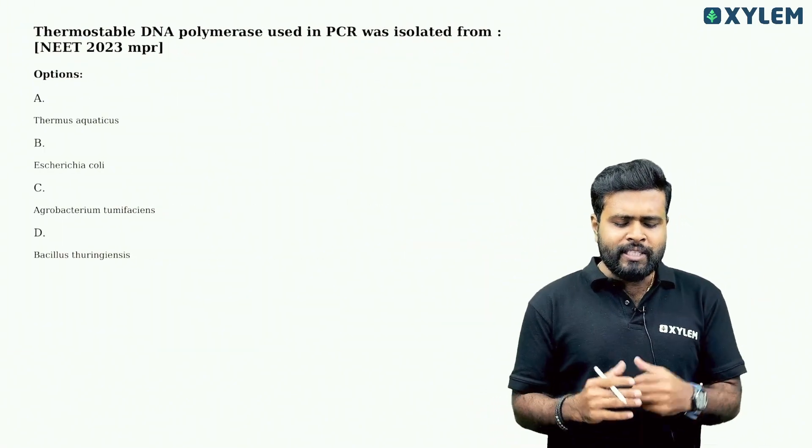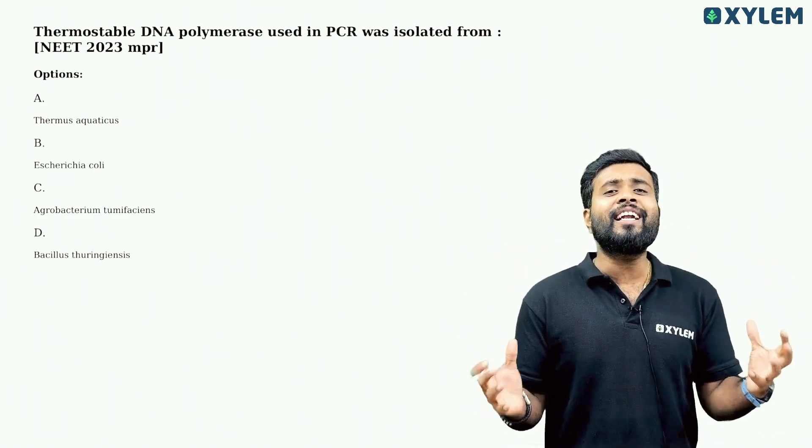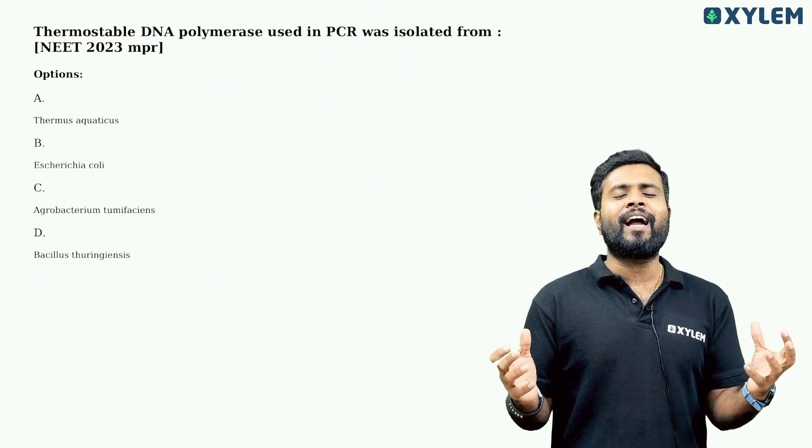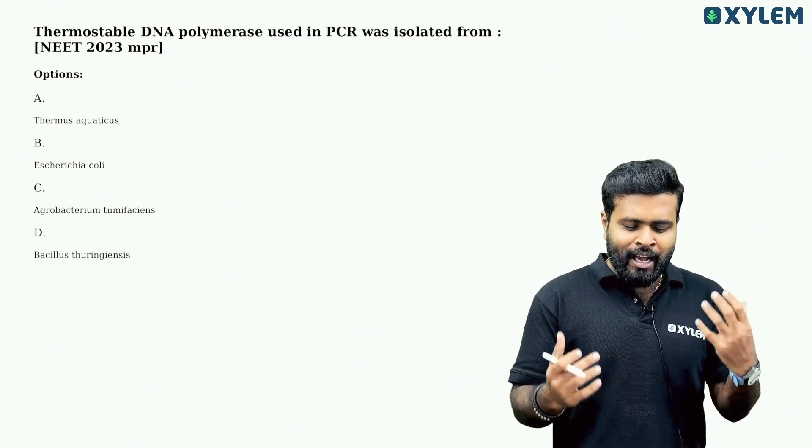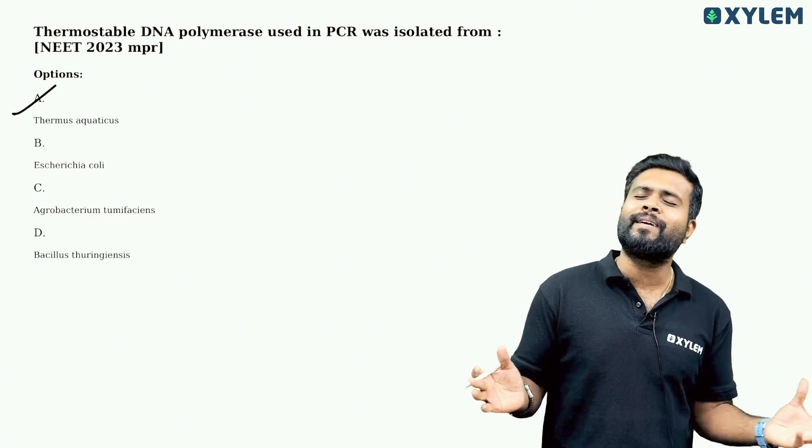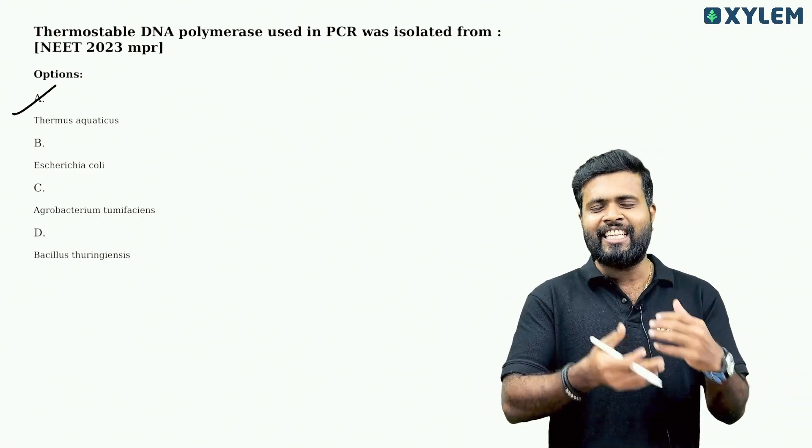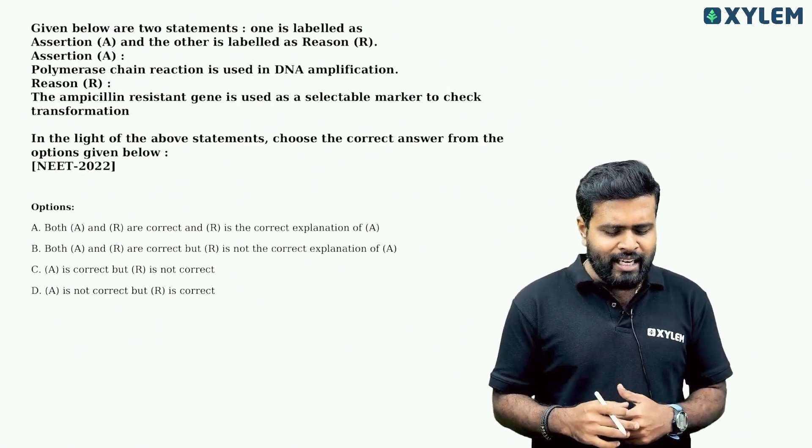Next question. Thermostable DNA polymerase used in PCR was isolated from? It's simple - we can derive it from Thermus aquaticus. We can isolate it from there.